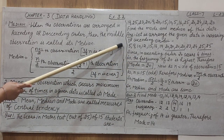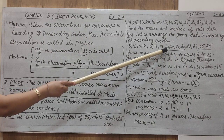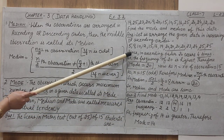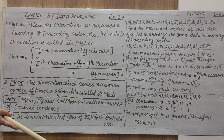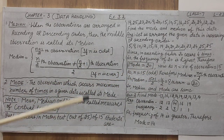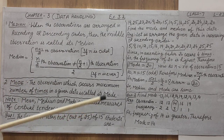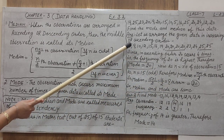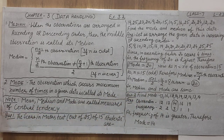Summary of steps: First, arrange the data in ascending or increasing order and write down all entries — do not remove any. If any entry comes 3 or 4 times, write it together. Next, count which entry comes the maximum number of times — that is the mode. Then check if the number of observations is odd or even and use the appropriate formula to find the median term number, then identify that term from the arranged data.